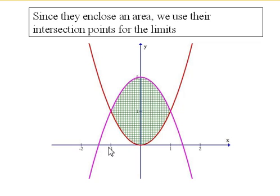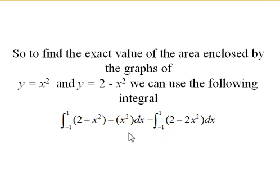These two happen to intersect at negative 1 and 1, and we only care about the x values because those will be our limits of integration. So the definite integral calculating this area is going to look like the following: negative 1 to 1, function on top, 2 minus x squared, minus the function on bottom, x squared. And we can simplify a little bit in this case.